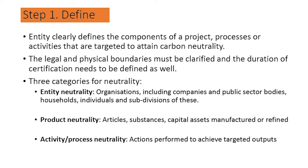Three categories for carbon neutrality exist: entity neutrality — organizations including companies, public sector bodies, households and individuals; product carbon neutrality — article substances, capital assets manufactured or refined; and activity/process neutrality — actions performed to achieve targeted outputs.